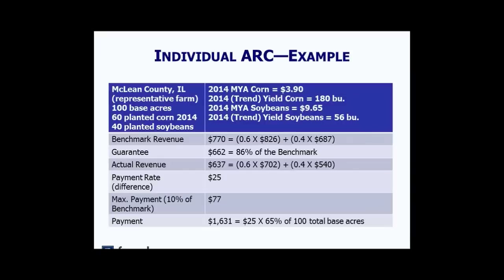On what happens if a tenant in a share arrangement wants Individual ARC but the landowner wants County ARC: since this must be a unanimous decision, disagreement between the tenant and landowner on program selection is a significant practical issue. This is exactly the kind of detail that FSA will need to address in the regulations — the program choice requires agreement from all parties.